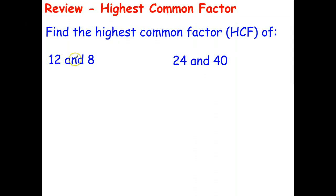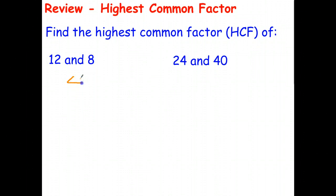I've got two numbers here: 12 and 8. Factors of 12 are 1×12, 2×6, and 3×4. Factors of 8 are 1×8 and 2×4. We're looking for the largest number common to both lists. The biggest number that's a factor of both 12 and 8 is 4, because 4×3=12 and 4×2=8.